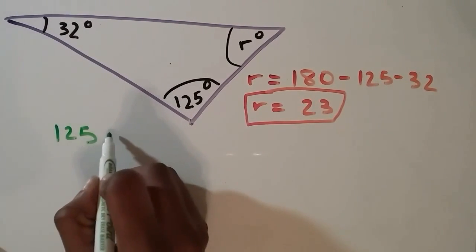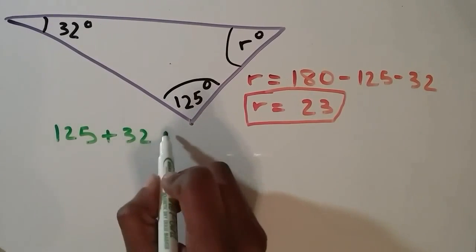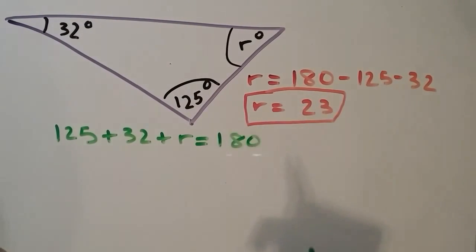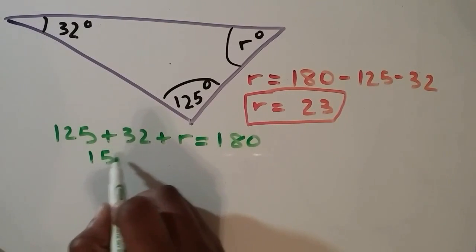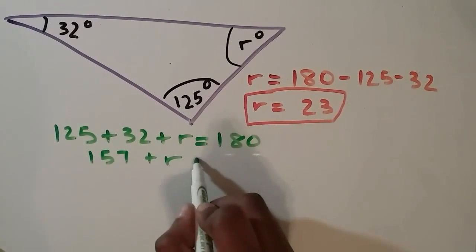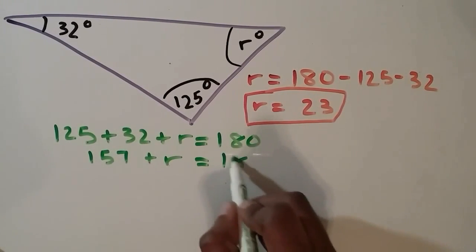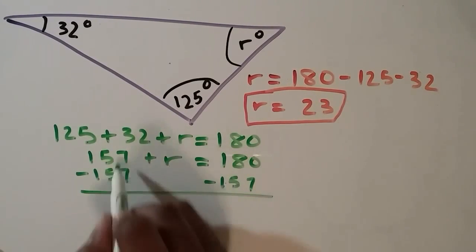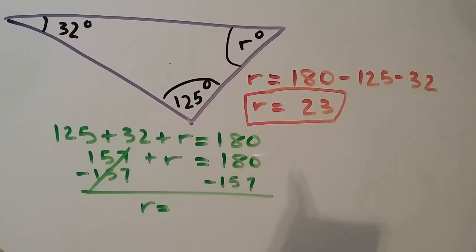Okay, another way to do this is by solving the equation 125 plus 32 plus r is equal to 180, and then we combine 125 and 32 and get 157 plus r is equal to 180. Then we subtract 157 from both sides, and we end up with the same answer. r is equal to 23.